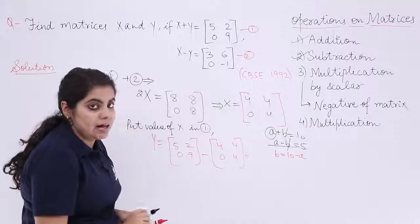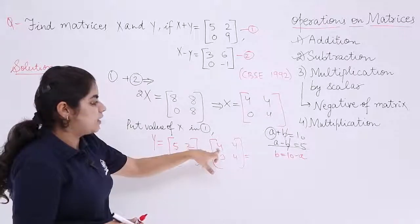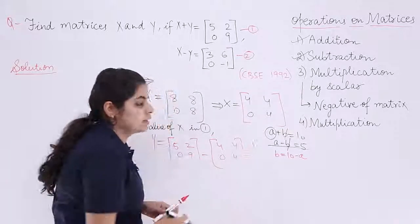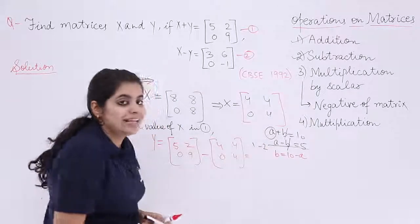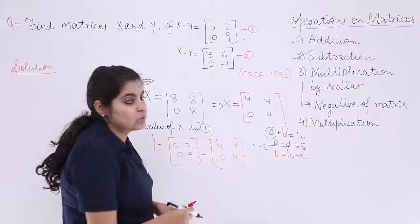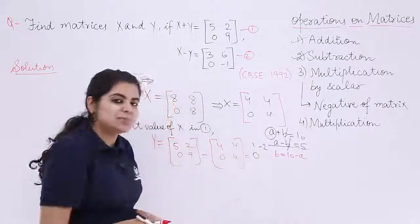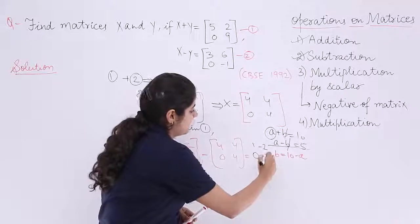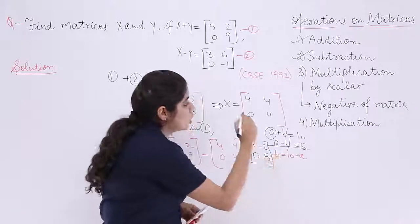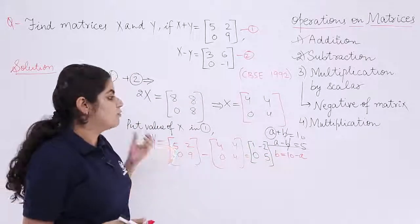So what is my answer? My answer is 5 minus 4 which is 1. Then next is 2 minus 4 which is minus 2. Next is what? 0 minus 0 which is 0. And last but not the least, I have 9 minus 4 is 5. So this is the answer to my matrix which is Y.